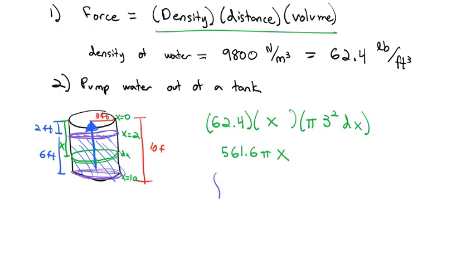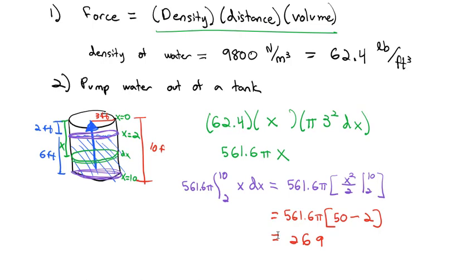We integrate from 2 to 10 our expression, pulling the constant out: 561.6π times x dx. So we have 561.6π times x²/2, integrated from 2 to 10, which equals 561.6π times (10² is 100, divided by 2 is 50, minus 2² = 2). When we plug this into our calculator, we get a total work done of 26,956.8π, about 27,000π foot-pounds.